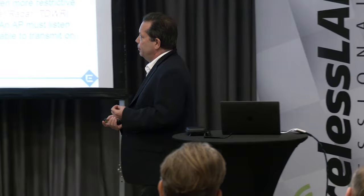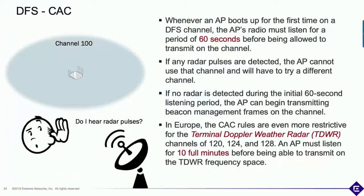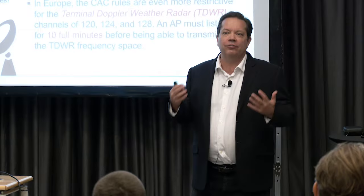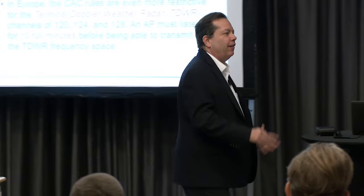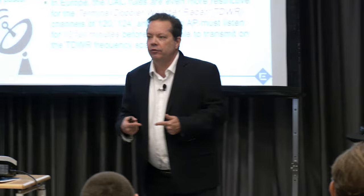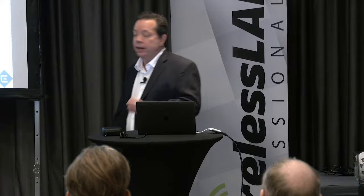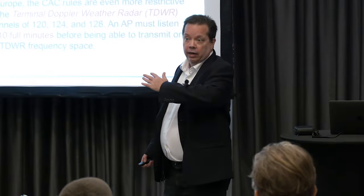It's a little different in Europe for channels 120, 124, and 128 — the terminal Doppler weather radar channels. For those three channels, an AP has to listen for 10 full minutes before it can transmit. I actually forgot I had European country code on an AP in Atlanta, put it on channel 124 as a static channel, everything looked green, no beacons, and I was getting really mad. Then I realized the AP was operating correctly — it was not allowed to transmit for 10 full minutes.